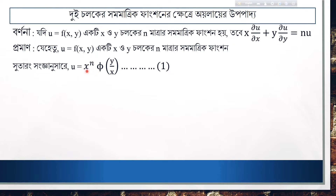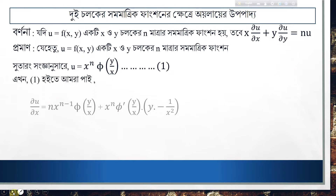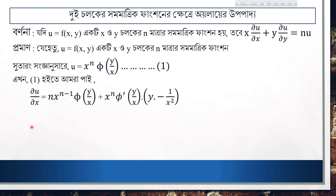u is equal to x to the power n, phi of y by x. So u equals x to the power n, phi of y by x. This is where we apply partial differentiation.